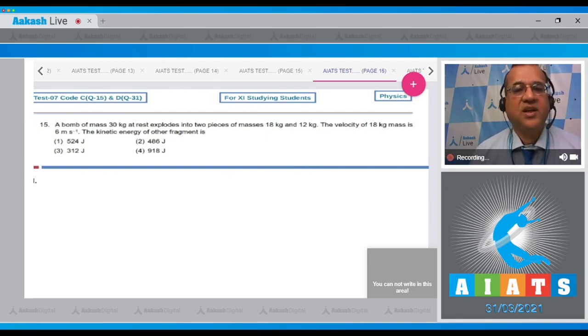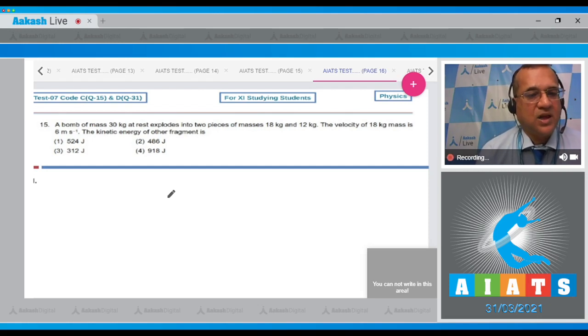Question number 15: A bomb of mass 30 kg is at rest, explodes into two pieces of 18 kg. The velocity of 18 kg mass is 6 meter per second. What is the kinetic energy of another fragment? Now a big mass of 30 kg was at rest, so this goes to two pieces, one of 18 kg and the second piece is of 12 kg. Now what is given? That this 18 kg piece is moving at speed of, let's say in this direction, 6 meter per second, and you can see what is the velocity of this piece.